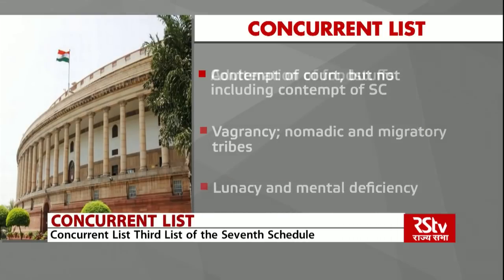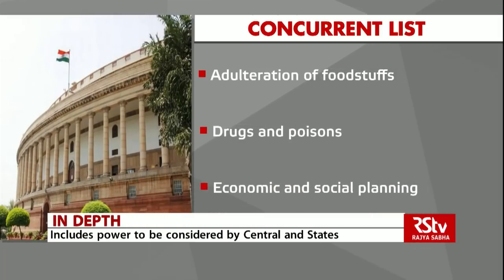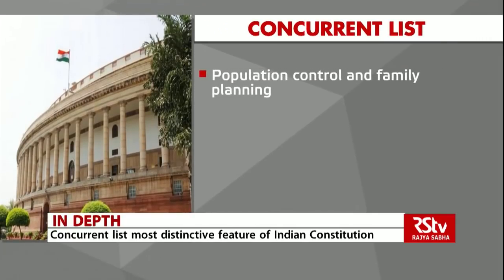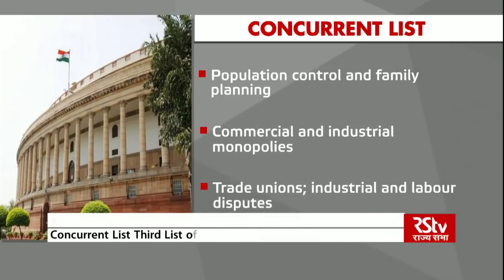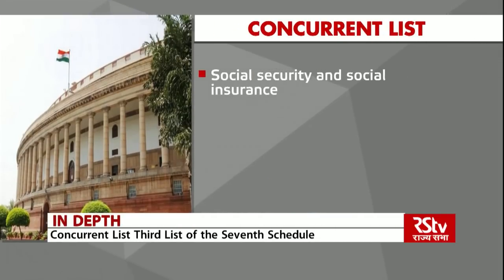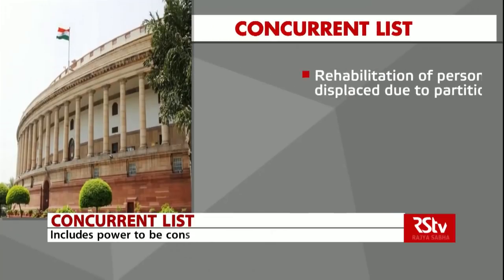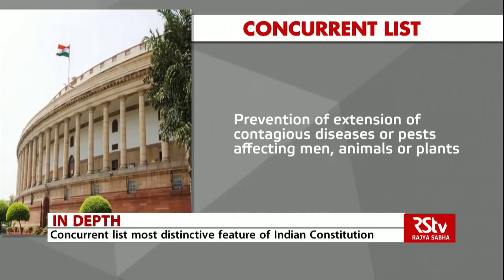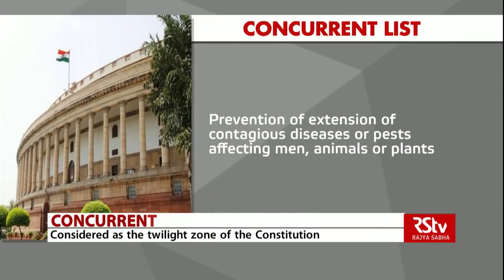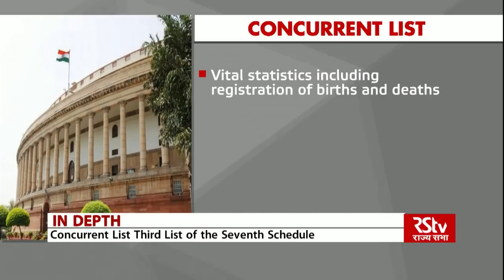Lunacy and mental deficiency. Adulteration of foodstuffs and other goods. Drugs and poisons. Economic and social planning. Population control and family planning. Commercial and industrial monopolies. Trade unions. Industrial and labour disputes. Social security and social insurance. Welfare of labour. Legal, medical and other professions. Rehabilitation of persons displaced due to partition. Charitable institutions. Prevention of the extension from one state to another of infectious or contagious diseases or pests affecting men, animals or plants. Vital statistics including registration of births and deaths.